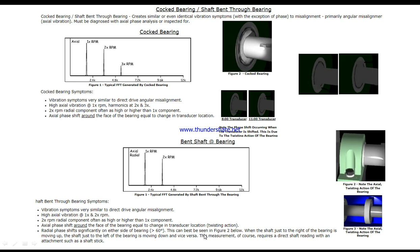a difference in angle higher than 60 degrees. This can be seen in Figure 2, where when the shaft just to the right of the bearing is moving up, the shaft just to the left of the bearing is moving down and vice versa. This measurement uses direct shaft reading with an attachment such as a shaft stick.